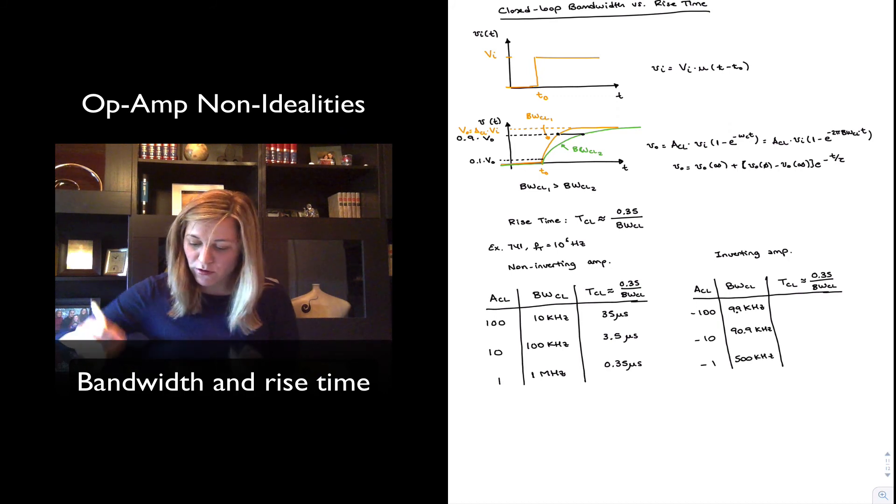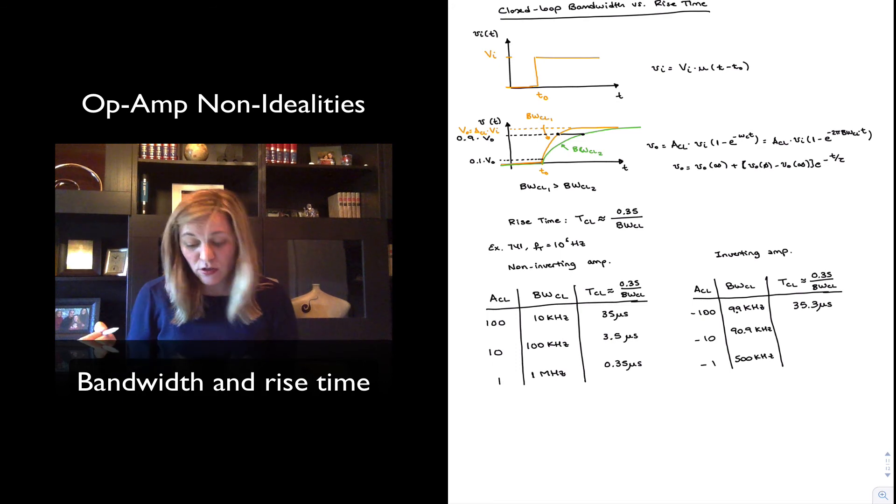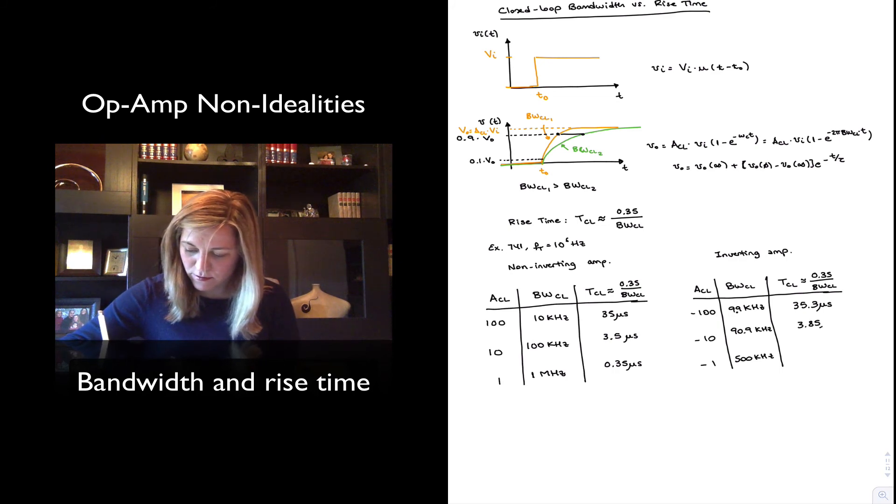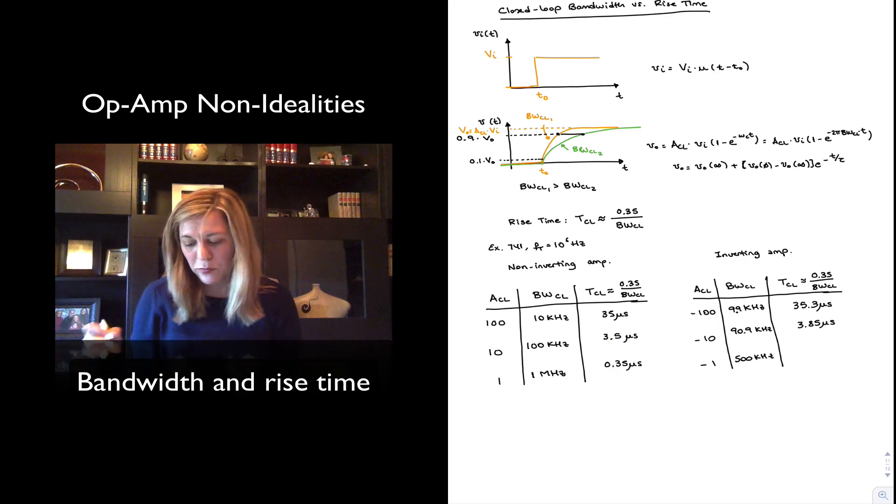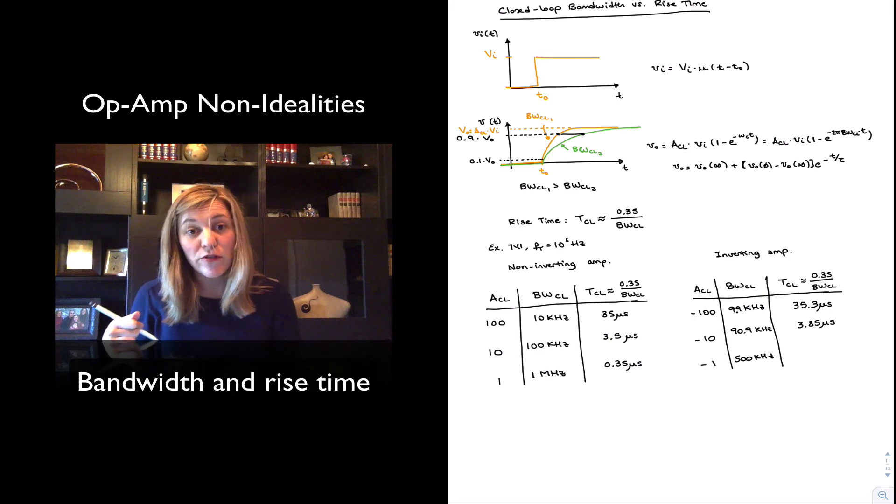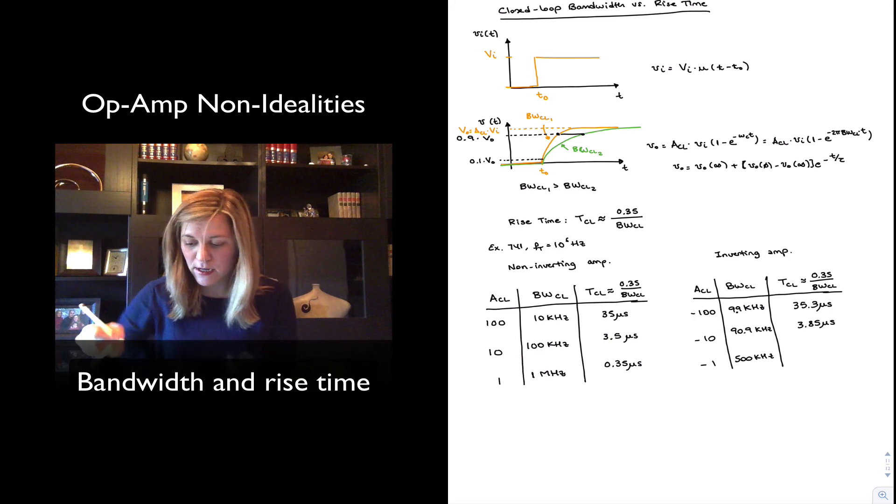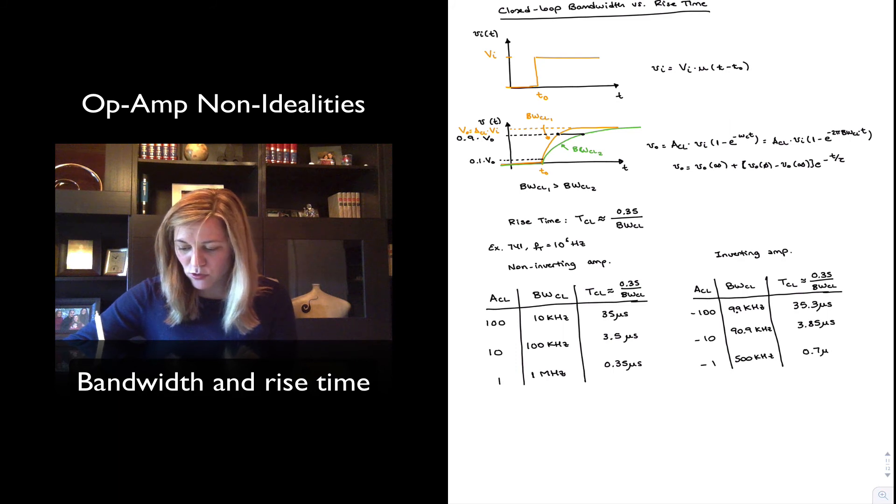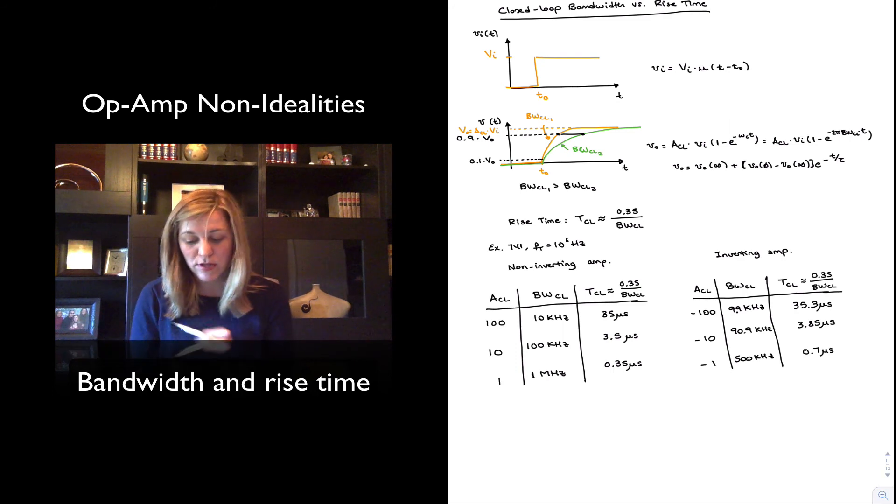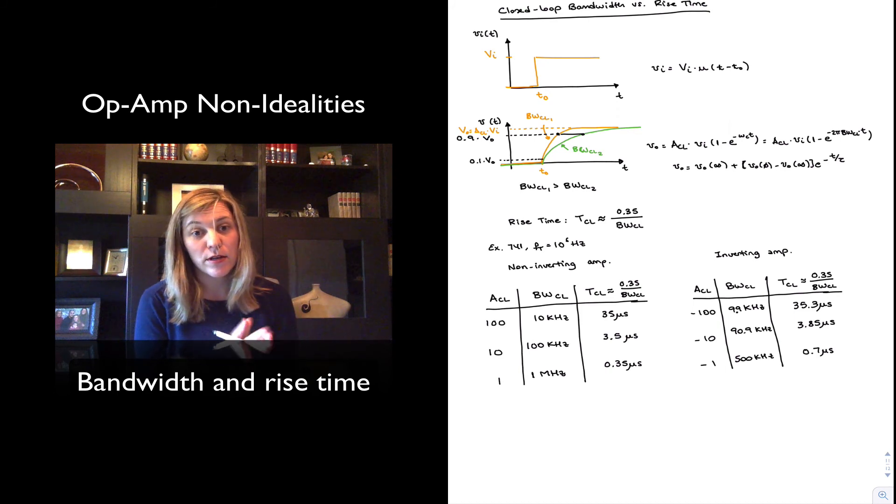And therefore our values for TCL will be 35.3 microseconds, so very close to the non-inverting amplifier for a large gain, 3.85 microseconds, so about 10% larger than the non-inverting amplifier for a gain of 10, and 0.7 microseconds, so almost double than that of the non-inverting amplifier for a gain of negative 1 because of the lower bandwidth of the inverting amplifier.